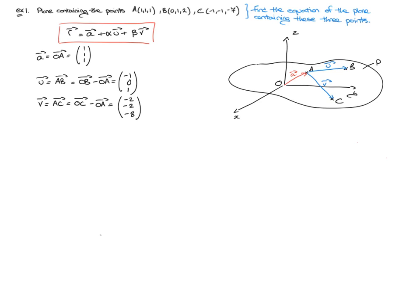We can say that x, y, and z will equal the position vector of point A — that was one, one, and one — plus alpha times U, so that was negative one, zero, and one, plus beta times negative two, negative two, negative eight. And there we have it — we've just found the vector equation of this plane.